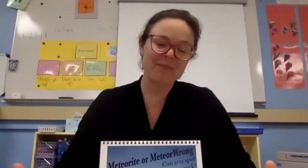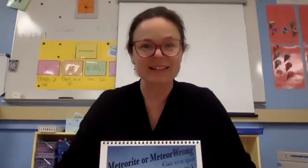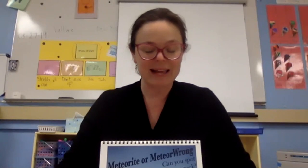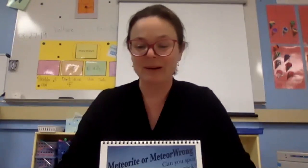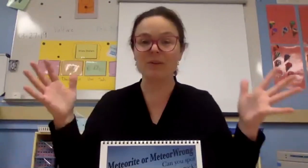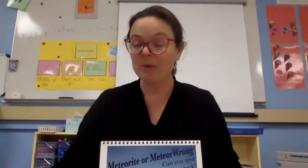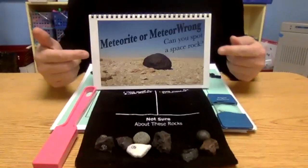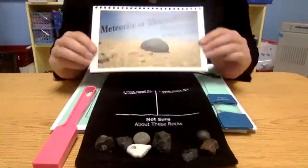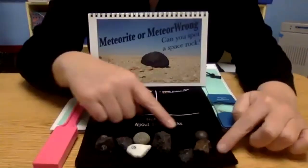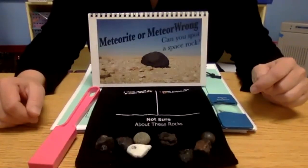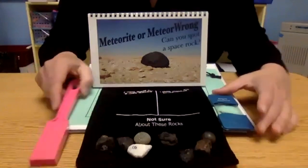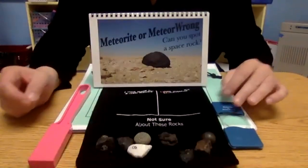Hi everybody. A lot of you out there have meteorite collections, and one of our toolkits through the NASA Night Sky Network is called Space Rocks. In that is a really fun activity called 'Meteorite or Meteor Wrong.' We got this originally from Chabot Space and Science Center and made it compact so you can take it with you and put it in your telescope case. It comes with lots of different rocks including a few space rocks and a tektite.